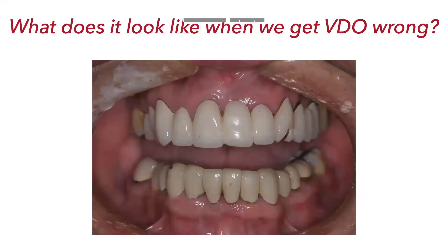What does it look like when we get vertical dimension wrong? This is a great example of when vertical dimension gets opened and we aren't doing it from a repeatable position. Most people get their vertical dimension opened in their maximum intercuspation. For a vast majority of people — well over 90% — your centric relation and your maximum intercuspation are not the same thing. When you have a discrepancy between seated joint position and a habitual bite, there is an adaptation that's going to occur. When tooth structure is interfering with that adaptation, we start to see failures in the dentistry.